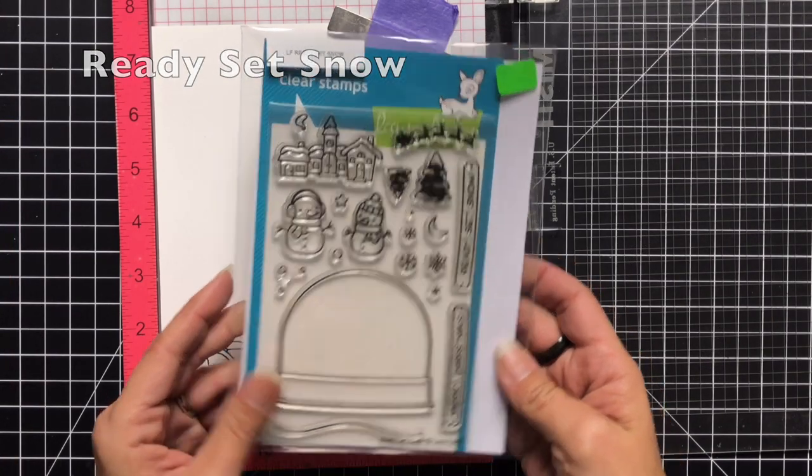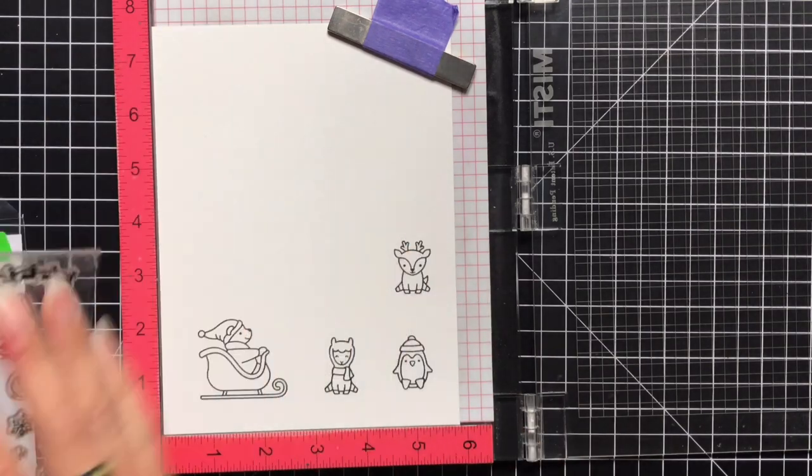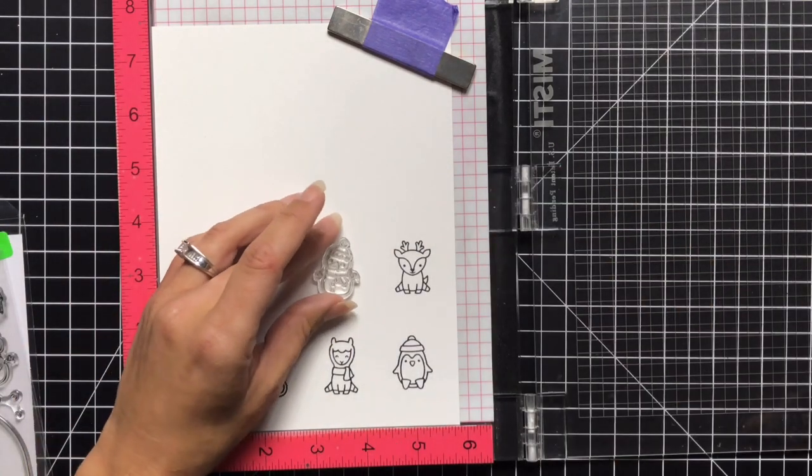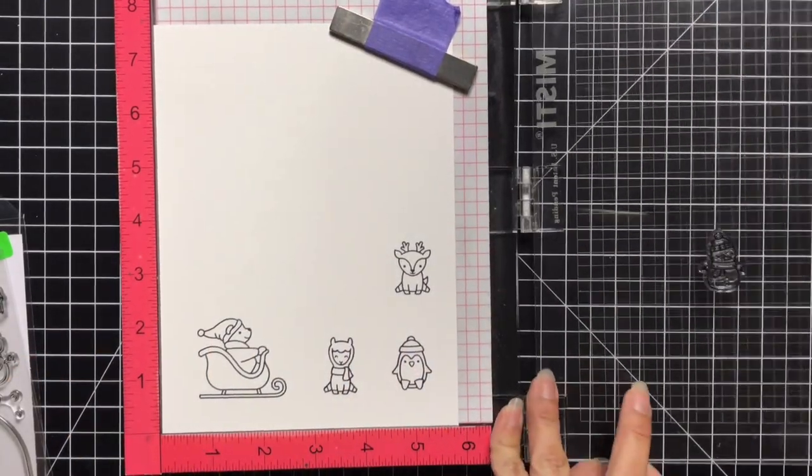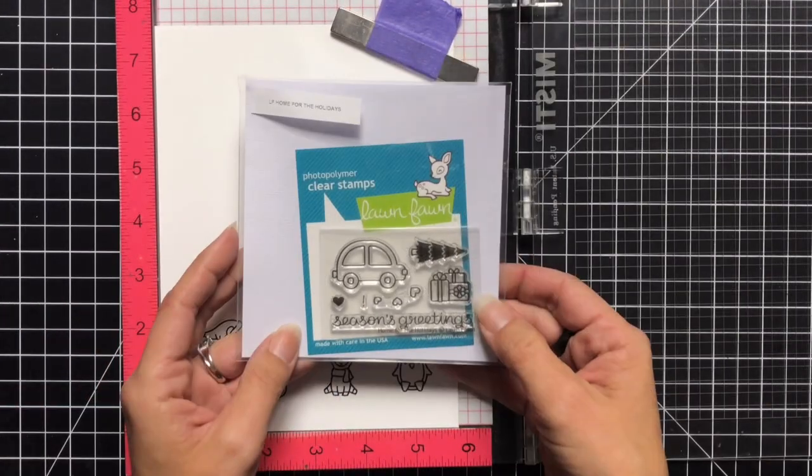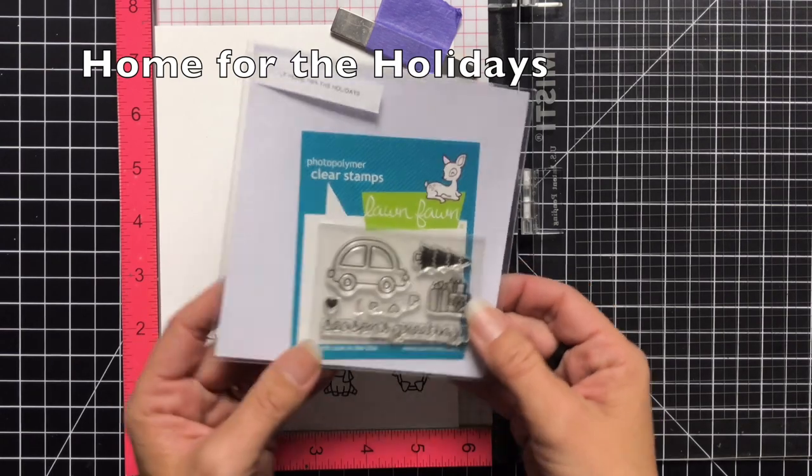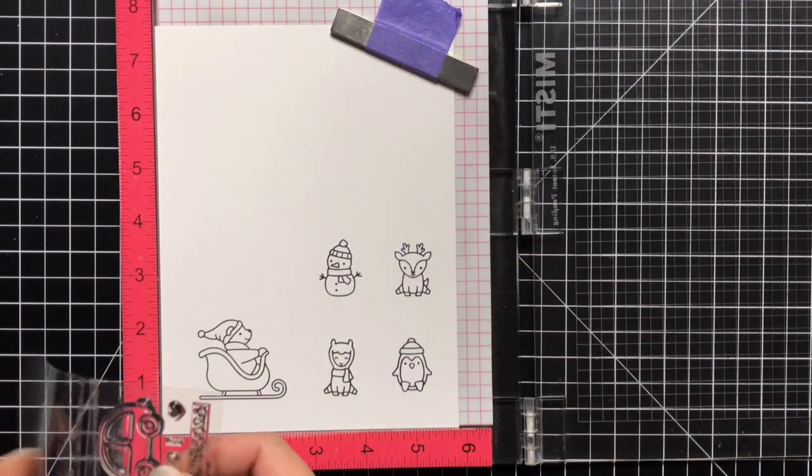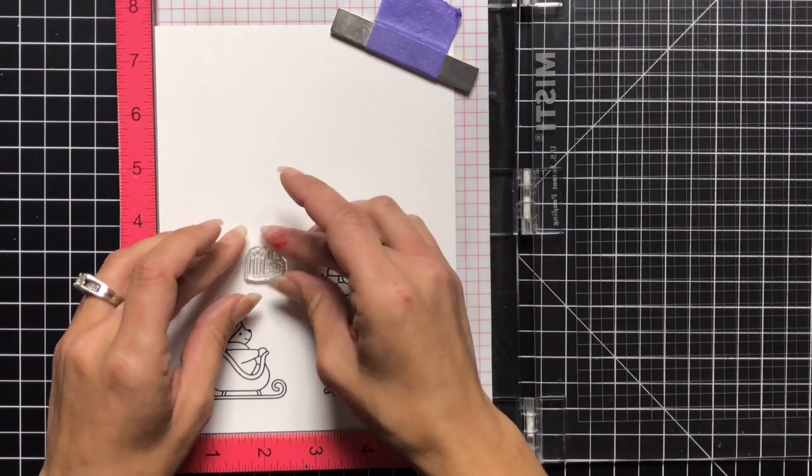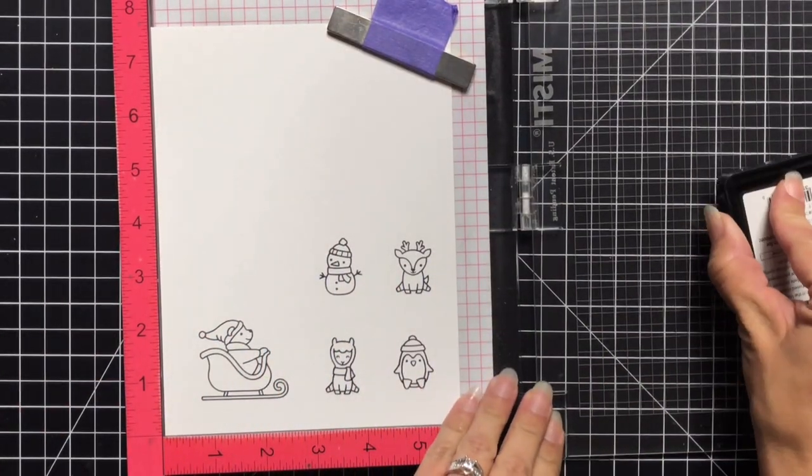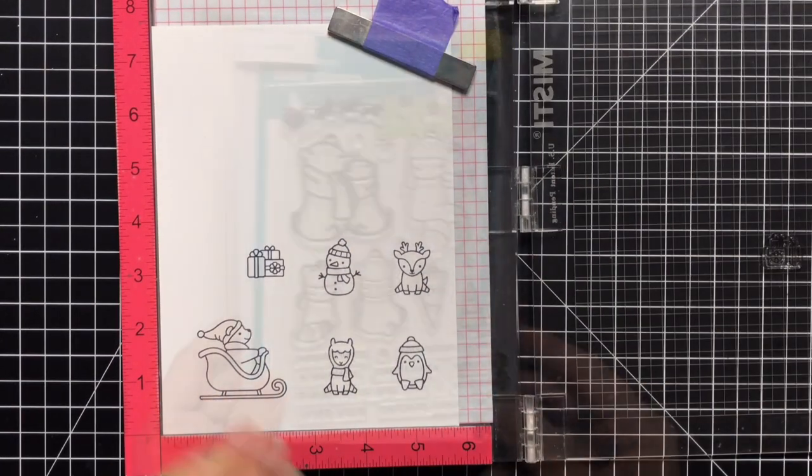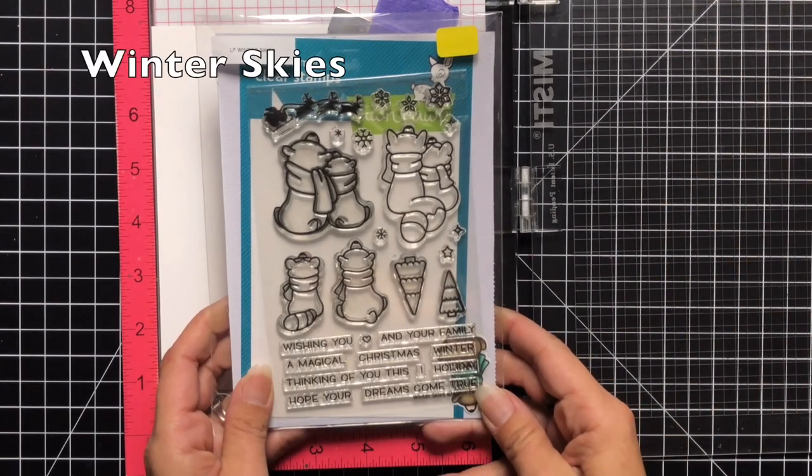I'm going to use a little snowman from Ready Set Snow. He was also the perfect size and I needed a snowman to go with my snowy hills and Christmas scene. So I stamped that as well and then I also have Home for the Holidays. And so for this one I'm just using these little presents. I wanted to have some presents to kind of go along with the Santa and the sleigh and these were the perfect look for it.